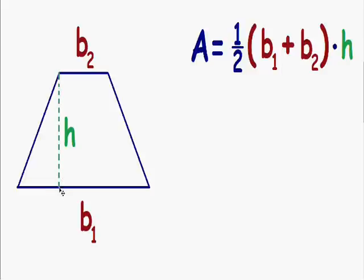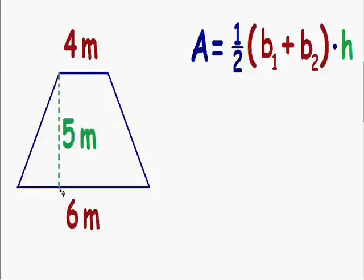So let's get started right away with an example. Here we have a trapezoid with a bottom side with a length of six meters and a top side with a length of four meters. The vertical distance between the top and the bottom is five meters.